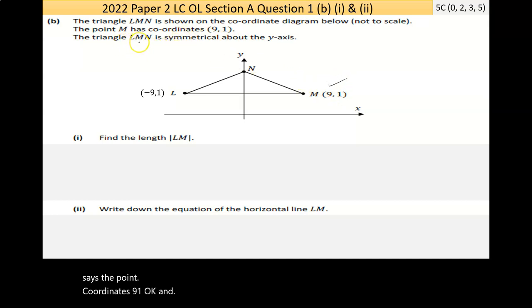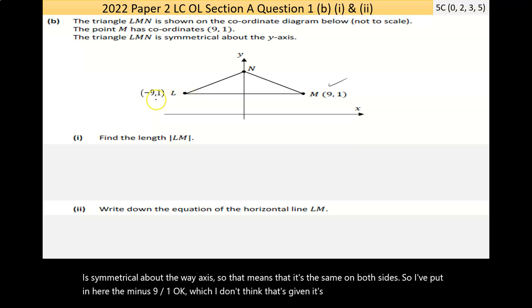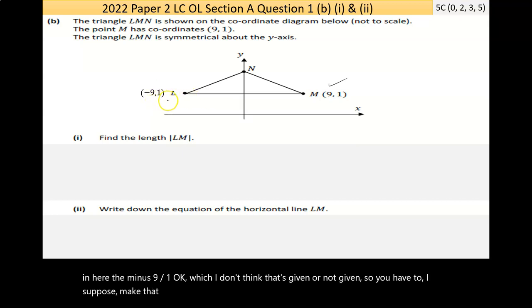That's not given. So you have to make that deduction. If this is nine units to the y-axis, it's going to be nine units on the negative side of the x-axis. So it says find the length of LM. Now, in the notes, I did a different way, but this is actually much easier.